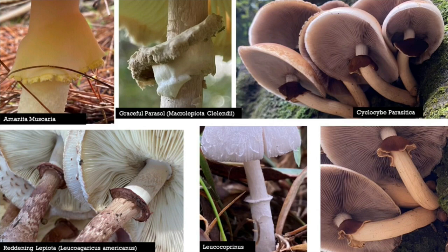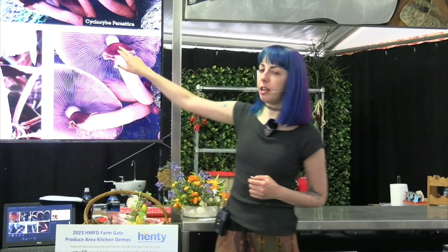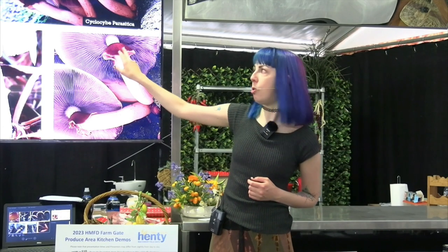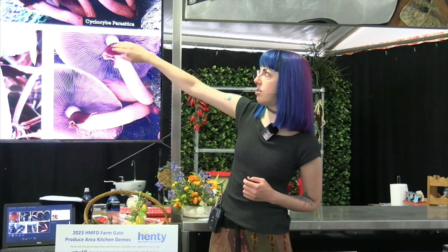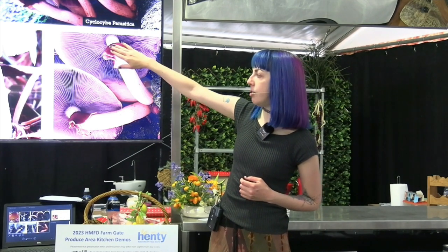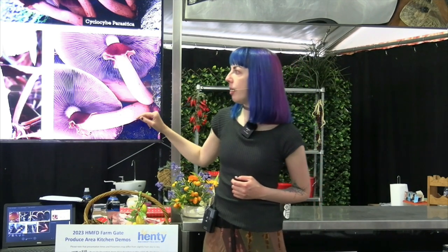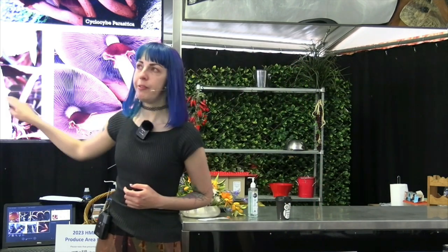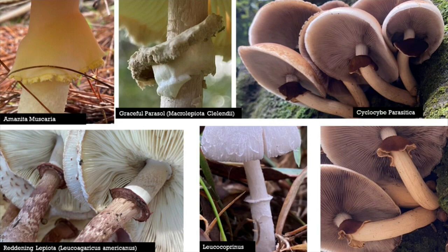Here are more examples of the partial veil. You can see spore deposits dark brown on top. They can be very small, or they can be more like a skirt with a nice fringe.